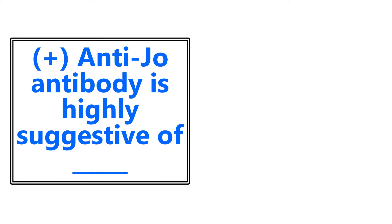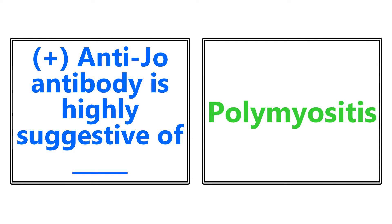Next one: a positive anti-Jo antibody is highly suggestive of polymyositis. I think everybody knows at this point that the different antibodies are very high yield. Unfortunately, it's kind of just a lot of rote memorization. There are some study aids you can use out there, but positive anti-Jo antibody is one that I always had a hard time remembering, and it is seen with polymyositis.